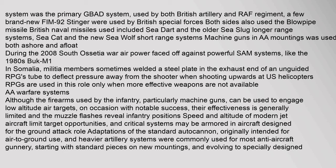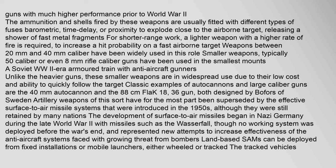Although infantry firearms, particularly machine guns, can be used to engage low-altitude air targets on occasion with notable success, their effectiveness is generally limited and muzzle flashes reveal infantry positions. Speed and altitude of modern jet aircraft limit target opportunities, and critical systems may be armoured in aircraft designed for ground attack. Adaptations of standard autocannon and heavier artillery systems were commonly used for most anti-aircraft gunnery, evolving to specially designed guns with much higher performance. Ammunition fired by these weapons is usually fitted with different types of fuses — barometric, time delay, or proximity — to explode close to the airborne target.